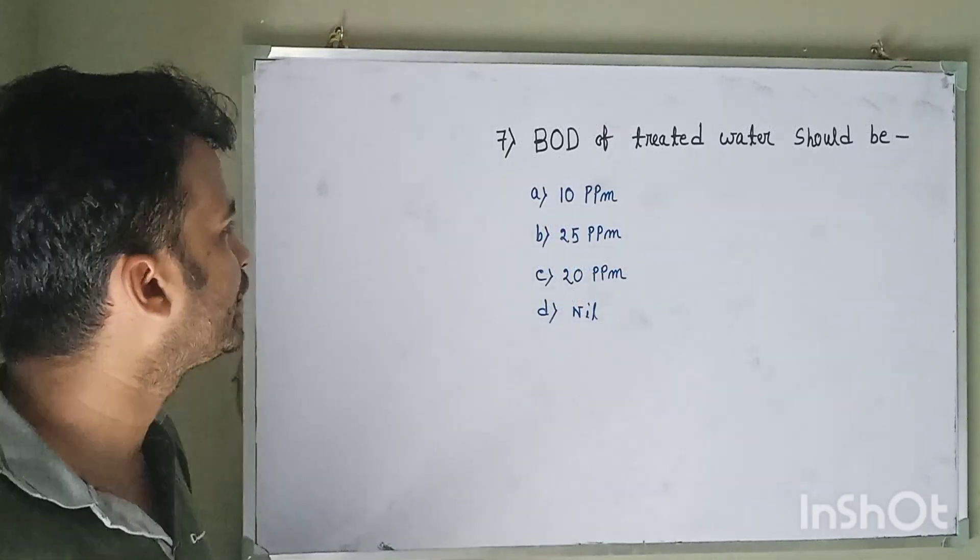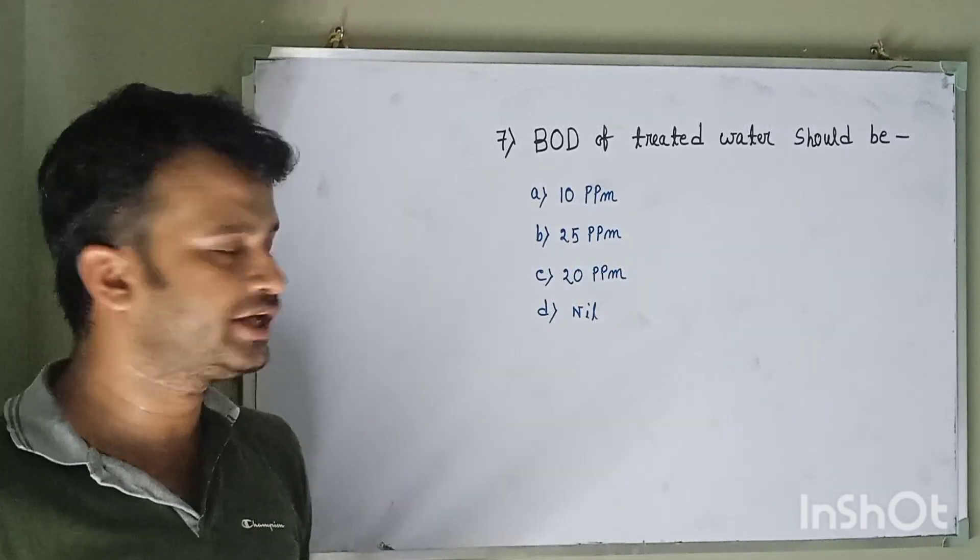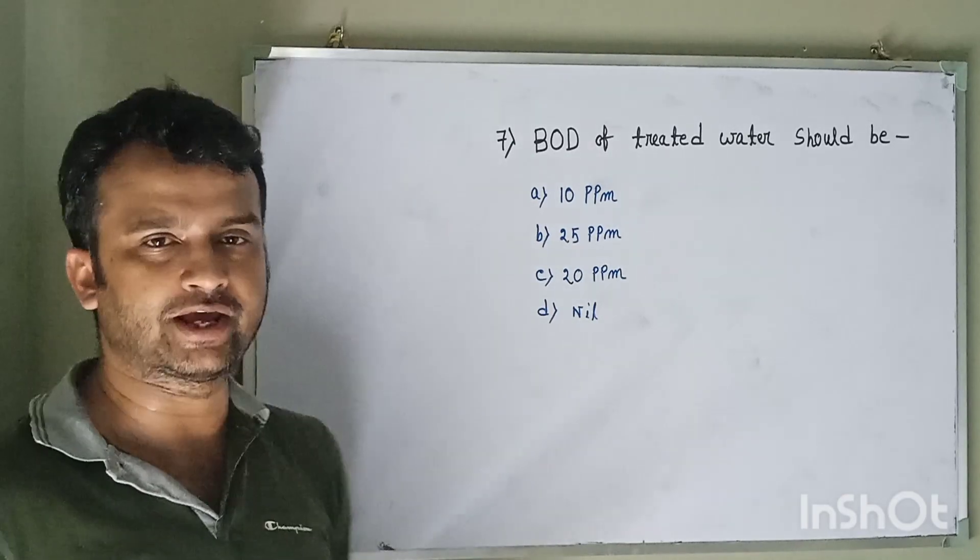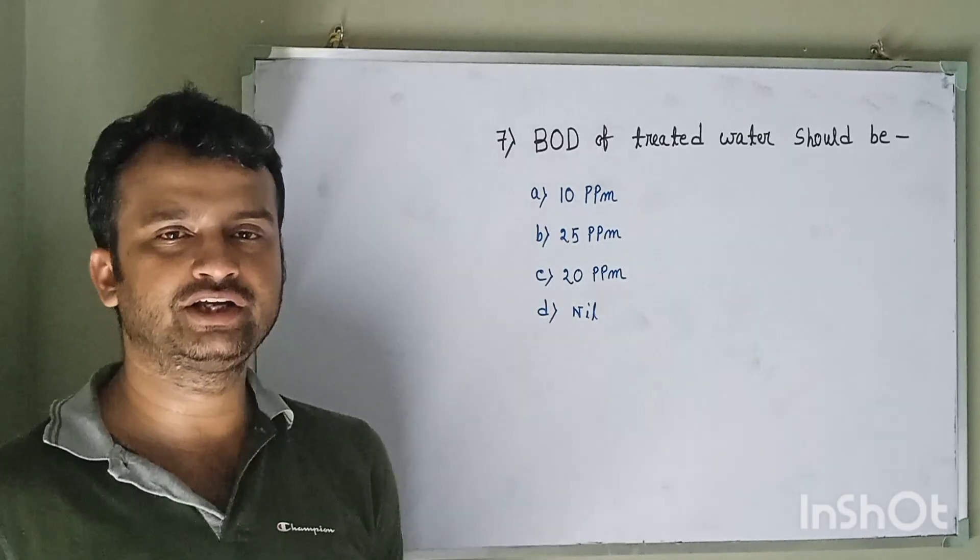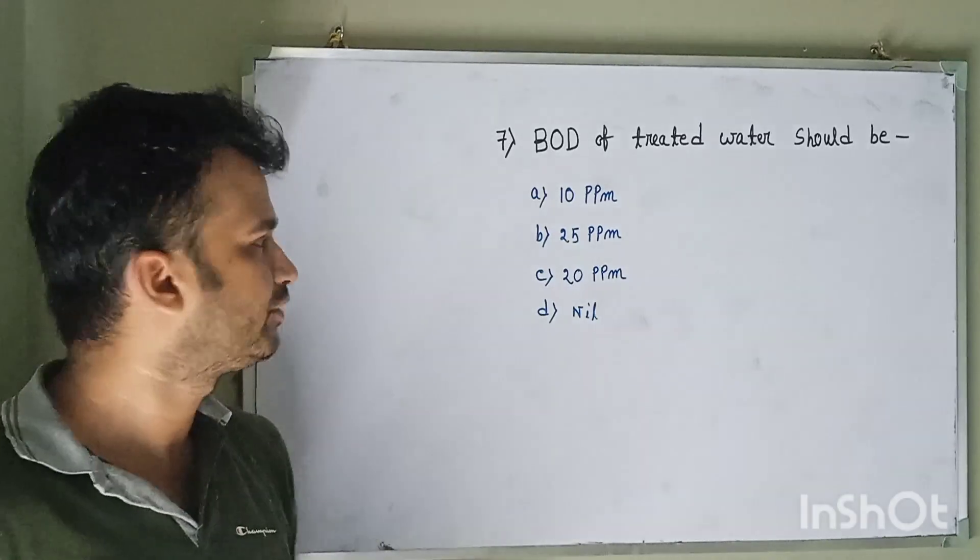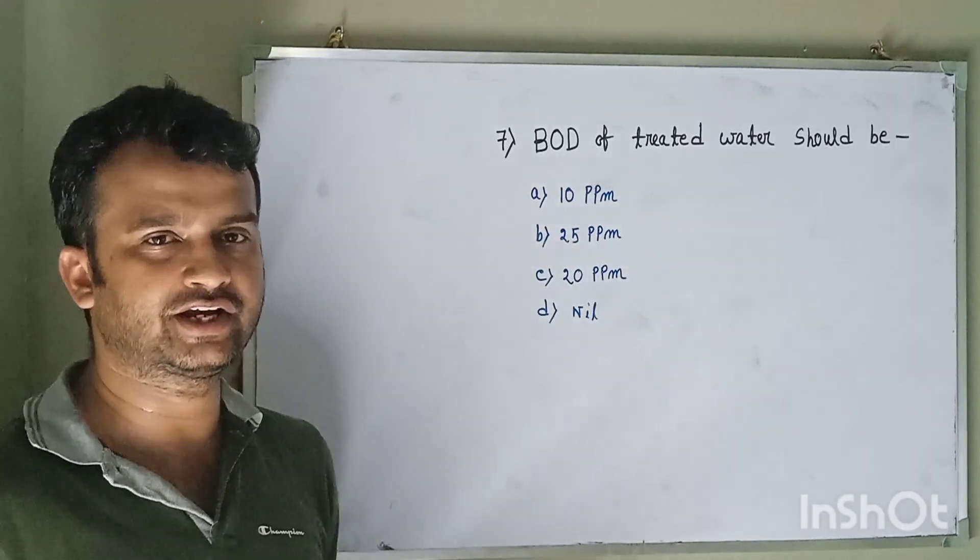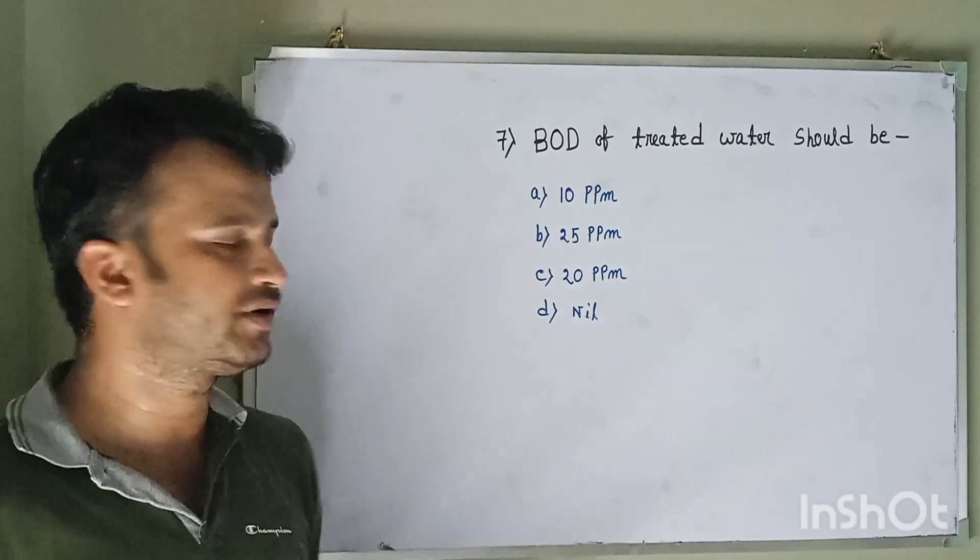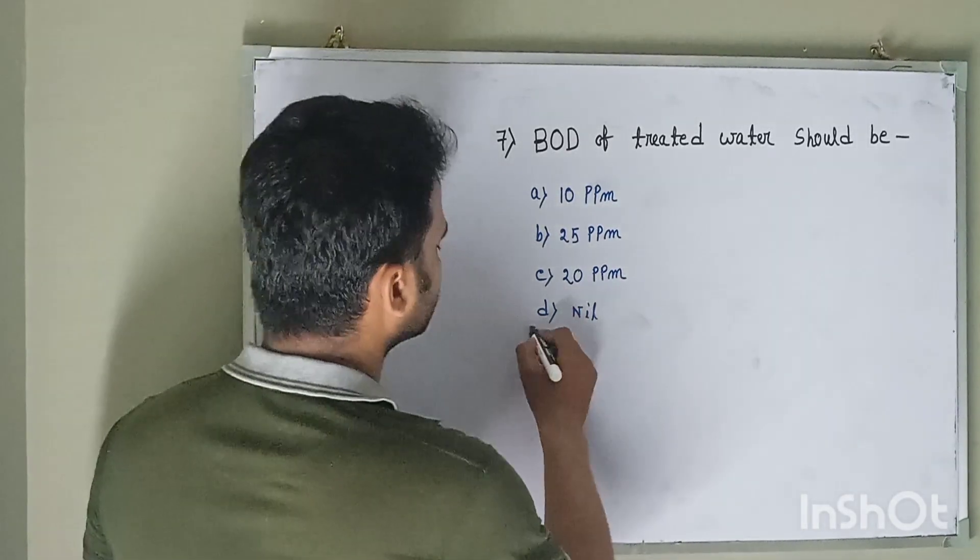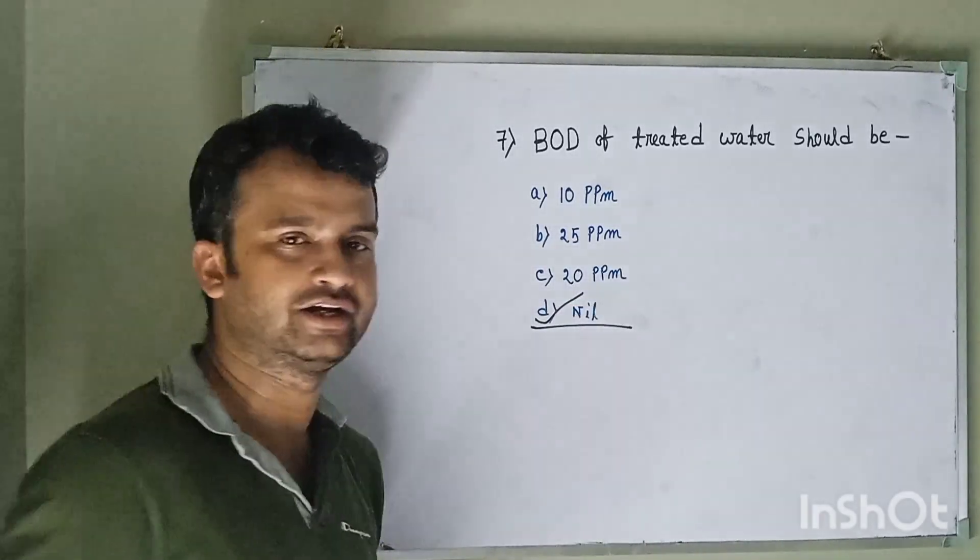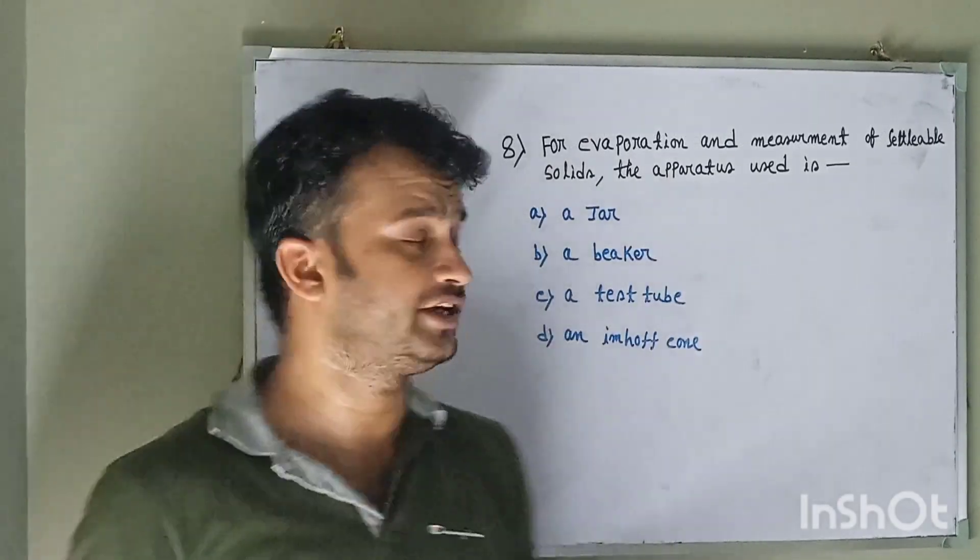Question number seven: Turbidity of potable water should be option A 10 ppm, option B 25 ppm, option C 20 ppm, and option D nil or 0. Always remember, the turbidity of potable water should be nil or 0. So the correct answer is option D, nil.